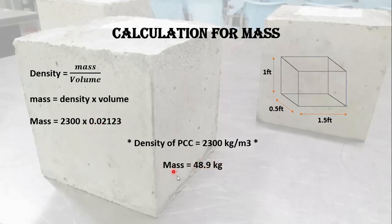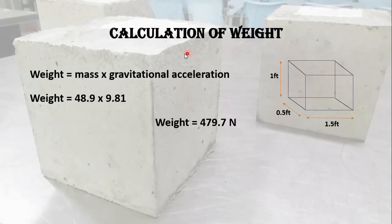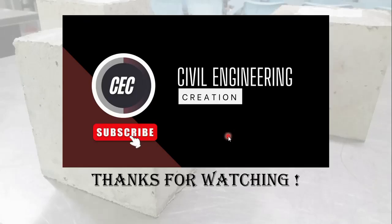Now you can calculate the weight easily by multiplying the mass by gravitational acceleration, which is 9.81 m/s² at the surface of Earth. So the weight of this concrete block is 479.7 N. This is today's lecture. Thanks for watching.